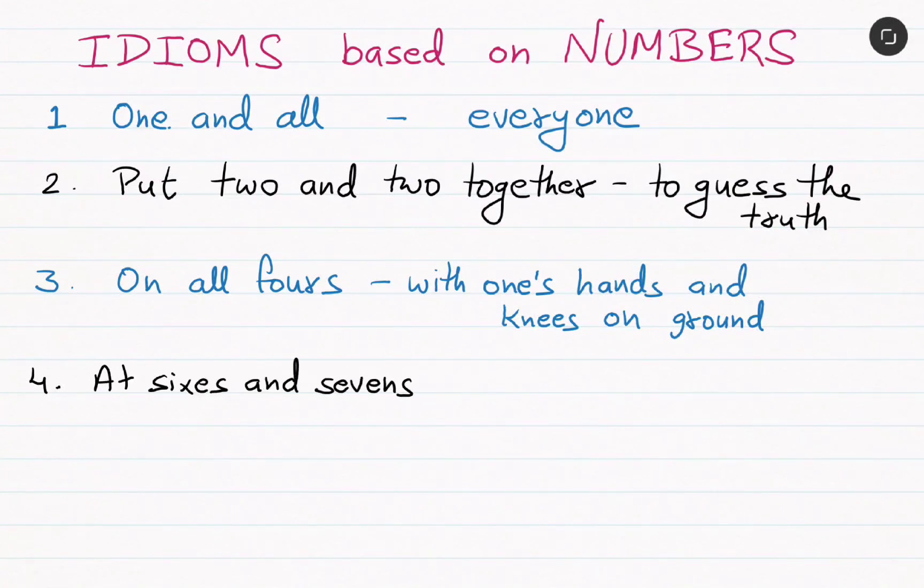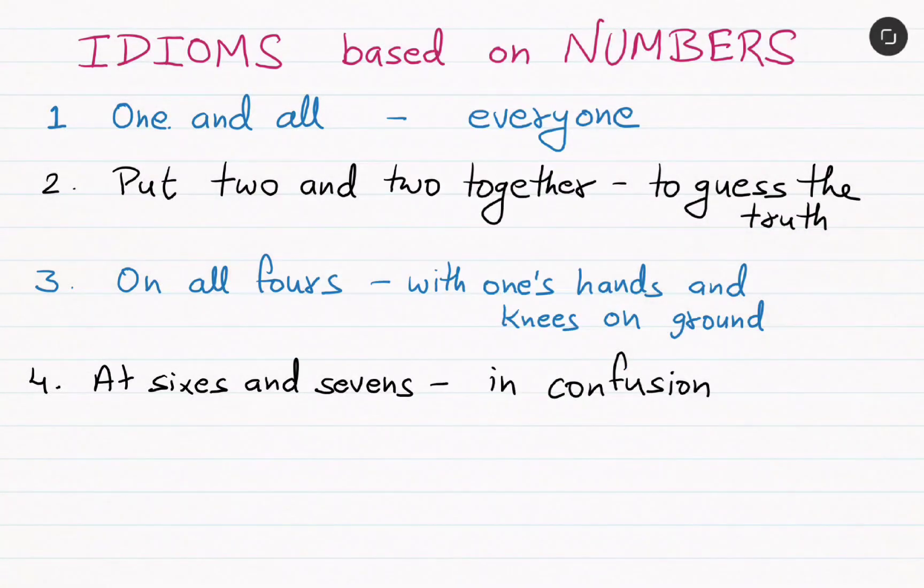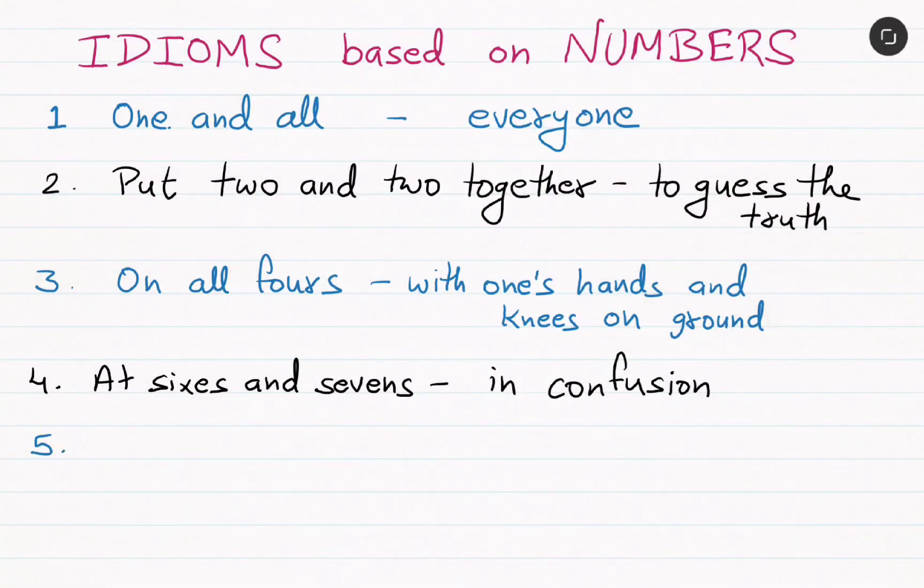Number four, 'at sixes and sevens,' that means in confusion. Number five, 'in one's eighties,' that is between the age of 80 and 90.